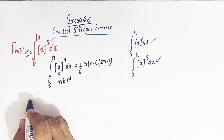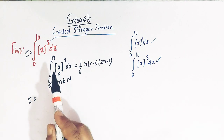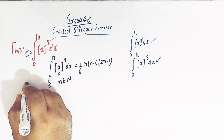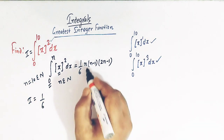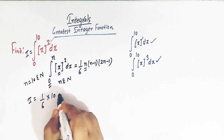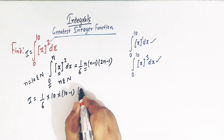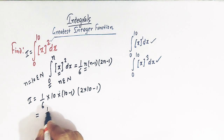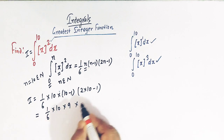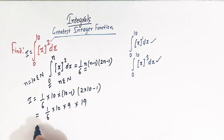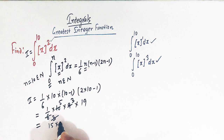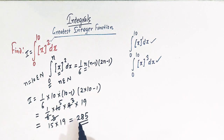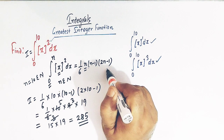If we take this integral as I and compare it with the formula, we can see that the value of n is 10, and 10 is a natural number. So the direct value of this integral is 1 over 6 times 10 times (10 minus 1) times (2 times 10 minus 1), which is 1 over 6 times 10 times 9 times 19. Simplifying, 10 times 9 is 90, divided by 6 gives 15, and 15 times 19 equals 285. So the value of this integral is 285.